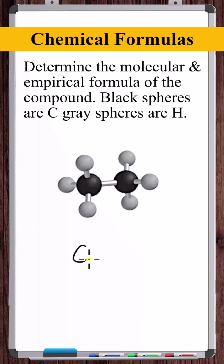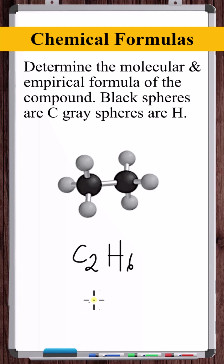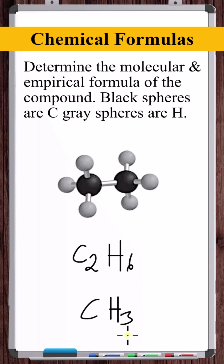Here we've got two carbons and one, two, three, four, five, six hydrogens, giving a molecular formula of C2H6. The empirical formula is one part carbon to three parts hydrogen, so the empirical formula is CH3.